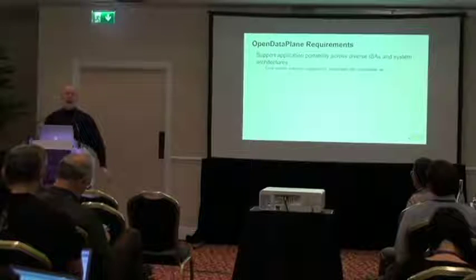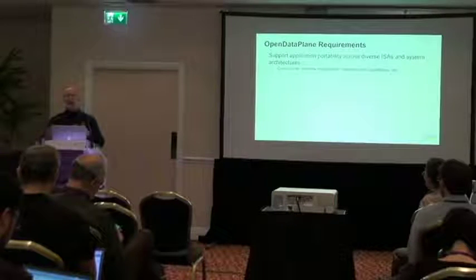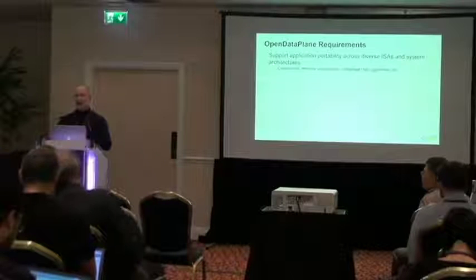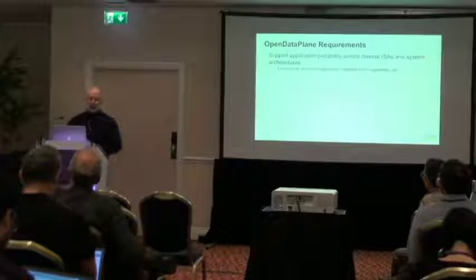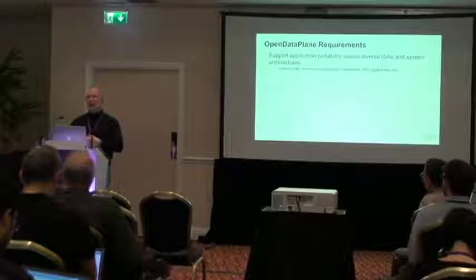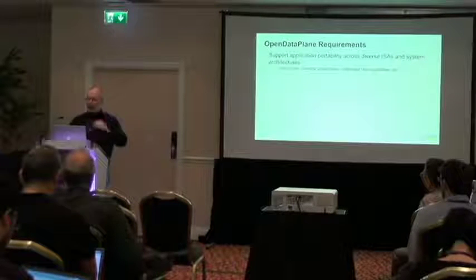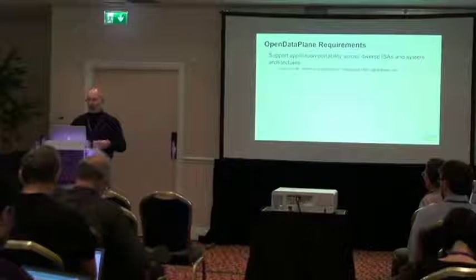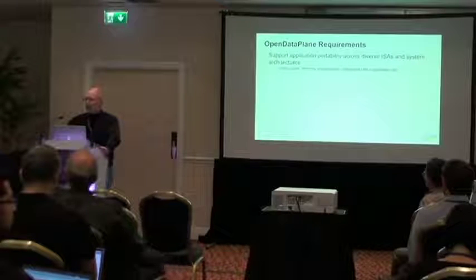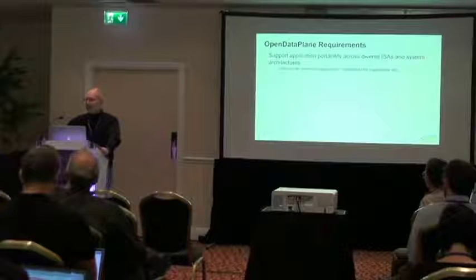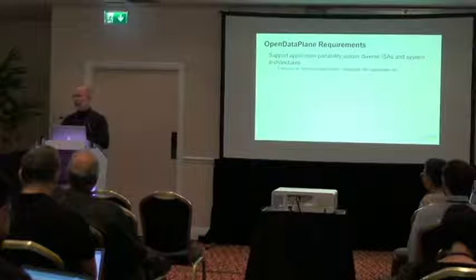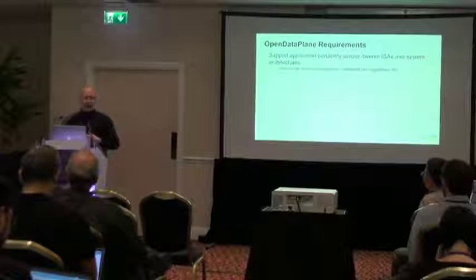The origins of ODP basically started in early 2013, when DPDK was already several years old but just starting to become open source. A lot of the stakeholders within our networking group got together and looked at the environment and came up with a number of requirements — really three things they were looking for. One was the ability to support application portability across diverse ISAs and system architectures — things like core counts, memory organizations, hardware-integrated capabilities, especially in the SOC space, which tend to be very disparate.